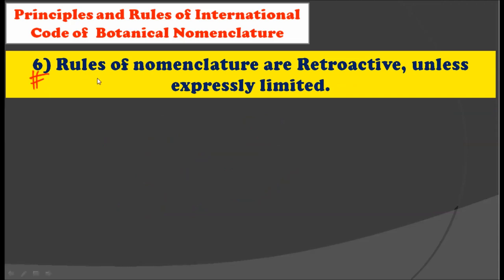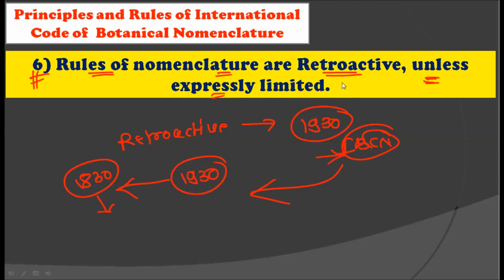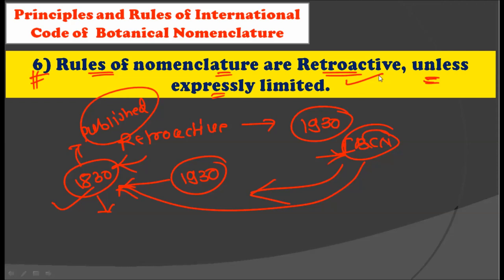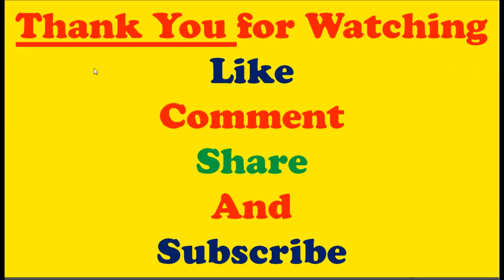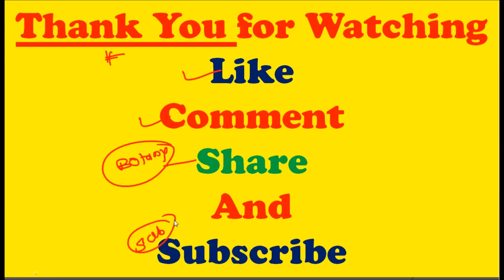The sixth and final rule is that the rules of nomenclature are retroactive unless expressly limited. Retroactive means coming into effect from a previous date — these rules can go back and apply to past times as well. So a species discovered in 1830 and published with a Latin name can also be considered valid under these rules. Thank you very much for watching. Please like the video, comment if you have any doubts, share it with friends studying Botany, and subscribe to the Botany Asana channel for the UPSC examination.